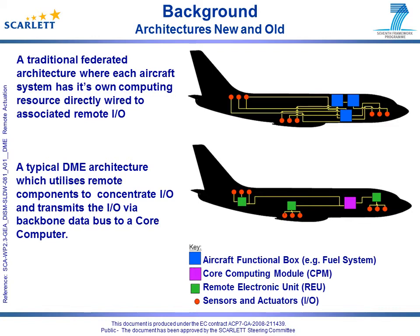Remote components are used to provide a sensor and actuator interface with a backbone network. A DME solution reduces the equipment housed in the electrical equipment bay, and the backbone network reduces the amount of wiring needed in the aircraft.